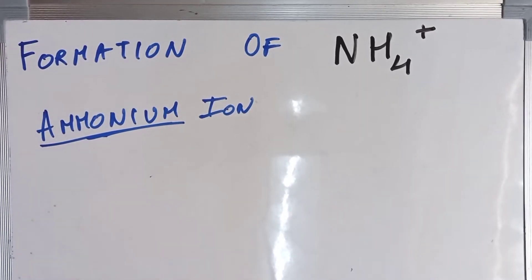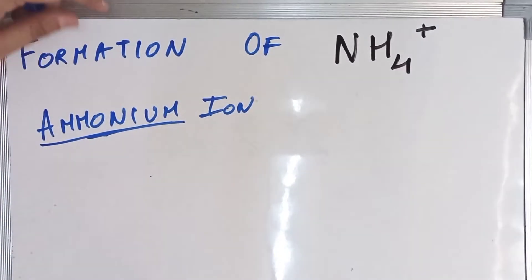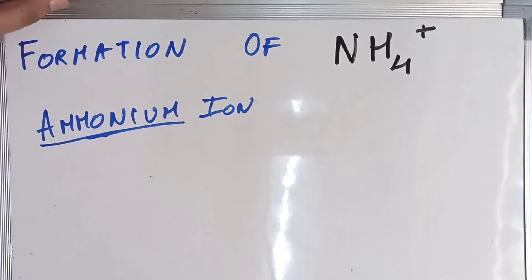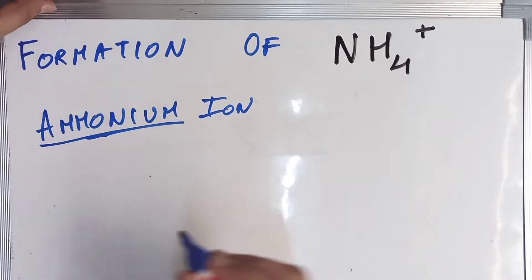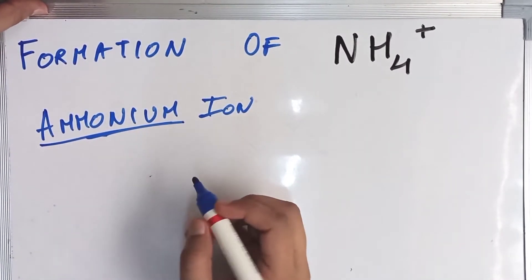Okay, so we are going to talk about the formation of NH4+ ion. This ion is also called ammonium ion. The ammonium word has been derived from NH3 ammonia. So how is the NH4+ ion formed?